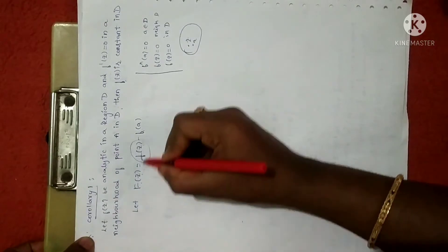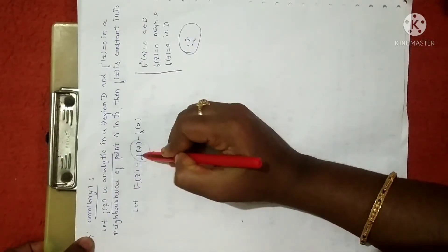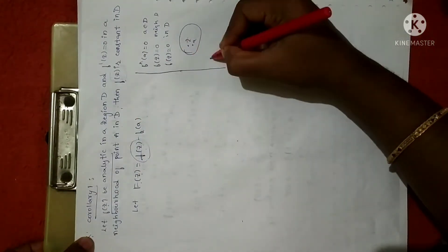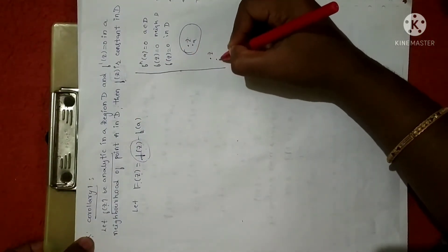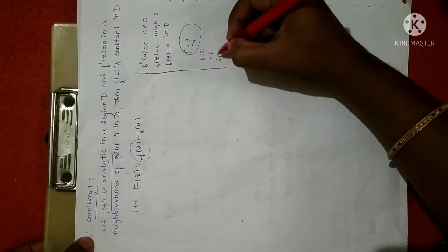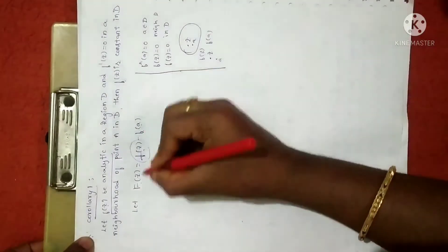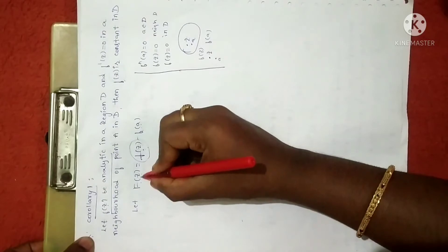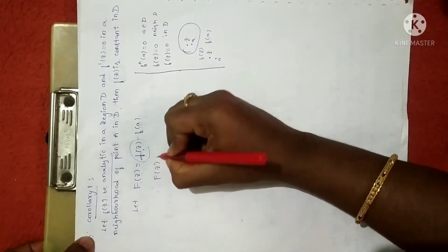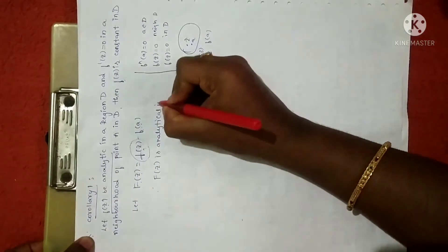Let me define the function F(z) as f(z) minus f(A). We have to prove that f(z) is constant in region D. Since f(z) is analytical, and since A is an arbitrary point, f(A) is also analytical and the difference is also analytical. Therefore F(z) is analytical in region D.